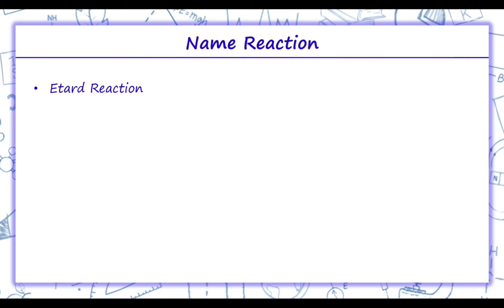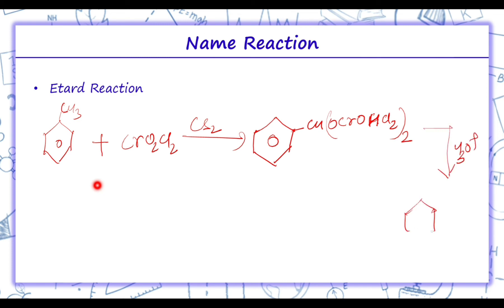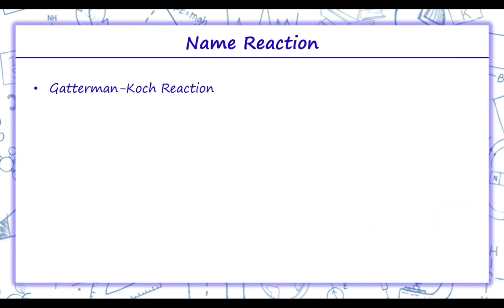Moving on to Etard reaction. In Etard reaction, toluene is treated with chromyl chloride, CrO2Cl2, in presence of CS2. This oxidizes the methyl group to a chromium complex, which on hydrolysis gives CHO — an aldehyde. So methylbenzene is converted to benzaldehyde, a reaction we also studied in the preparation of aldehydes.